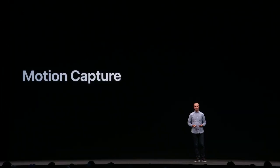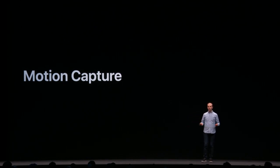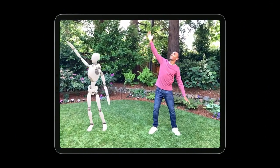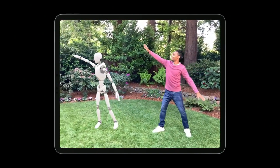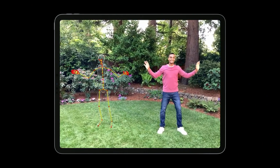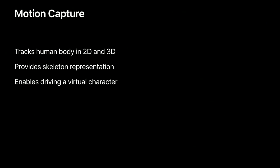Let's talk about another exciting new feature of ARKit 3: motion capture. With motion capture you can track the body of a person, which can then be mapped to a virtual character in real time. This could only be done with external setup and special equipment before — now with ARKit 3 it takes just a few lines of code and works right on your iPad or iPhone. Motion capture lets you track a human body both in 2D and 3D and provides a skeleton representation of that person, driven by advanced machine learning algorithms running on the Apple Neural Engine — available on devices with an A12 or later processor.